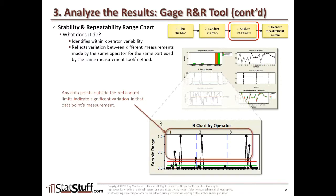In the output window, we're going to look for any data point that's outside of the red control limits, much like a control chart. If we see any data points outside those limits, it indicates some significant variation in that data point's measurement. These are the ones where we might want to explore further what contributes to the evaluations reviewed in the session window.